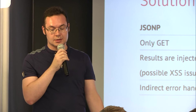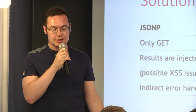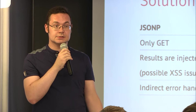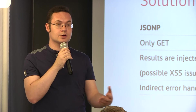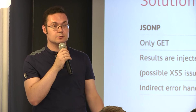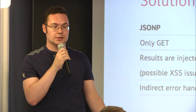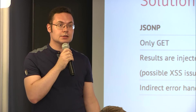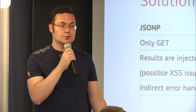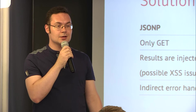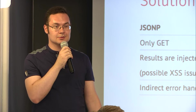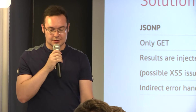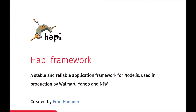With JSONP you can handle errors only indirectly by waiting for results — if there are no results, you get nothing. A proxy, on the other hand, supports GET, POST, PUT, and DELETE. The results are parsed, so it's secure. It has reliable error handling just like a regular AJAX request.